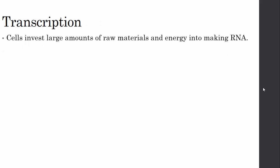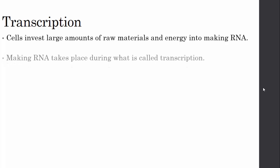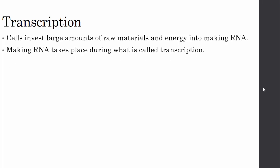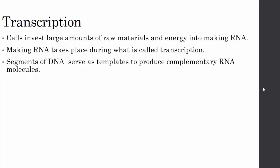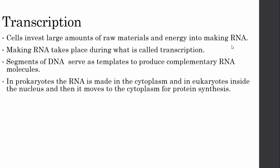Transcription: Cells invest large amounts of raw materials and energy into making RNA, which takes place during transcription. Segments of DNA serve as templates to produce complementary RNA molecules. Because RNA is making a copy, we call this transcription — you're copying exactly what the DNA has. In prokaryotes, RNA is made in the cytoplasm; in eukaryotes, it's made inside the nucleus and then moves to the cytoplasm for protein synthesis. Prokaryotes lack membrane-bound organelles, so transcription goes straight into the cytoplasm with no membrane-bound nucleus.